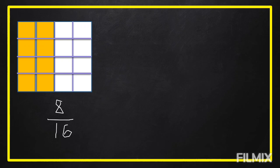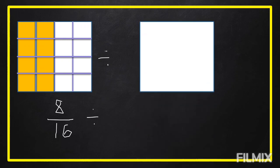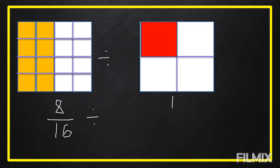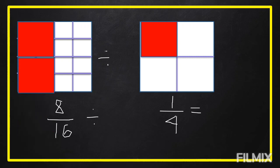We're going to divide this into our second figure. For the second figure, we divide it into four equal parts and shade one part, so the second figure is one fourth. So eight over 16 divided by one fourth — how many one fourths can fit into eight over 16? Let's count: one, two. So eight over 16 divided by one fourth equals two. There are two one fourths in eight over 16.